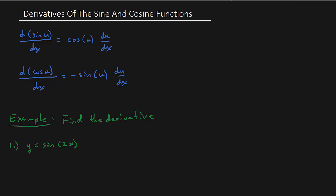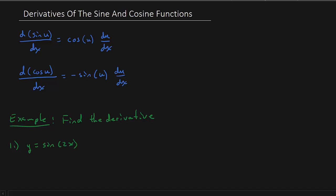How's it going everybody? This video we're going to look at finding derivatives of the sine and cosine functions. So the one thing that you've got to remember — all the stuff you've learned up to this point: the power rule, the product rule, quotient rule, chain rule — all that still applies. You're still going to have to use those properties to find the derivatives. But the difference now is we're not going to have just polynomials; we're finding the derivative of trig functions.